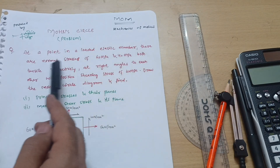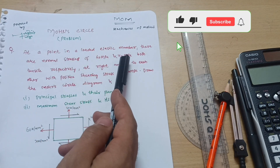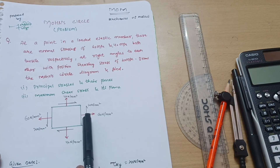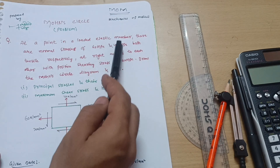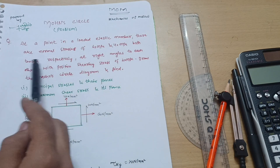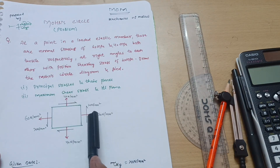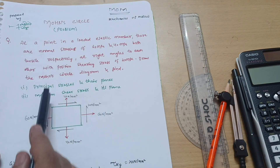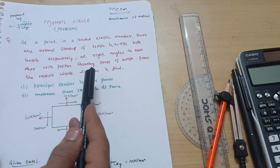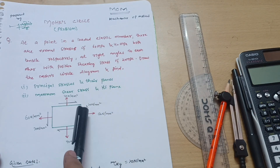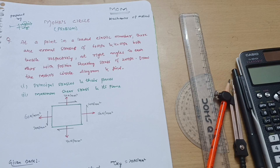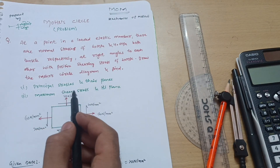At a point in a loaded elastic member, there are normal stresses of 60 MPa and 40 MPa. As you can see in the figure, 60 MPa is the normal stress and 40 MPa in this direction — both tensile stresses at right angles to each other, with a positive shearing stress of 20 MPa. This half-arrowhead represents the shearing stress of 20 MPa. Draw the Mohr's circle diagram and find principal stresses and their planes, maximum shear stress and its planes.